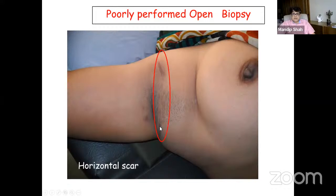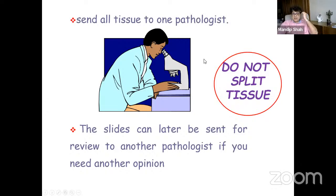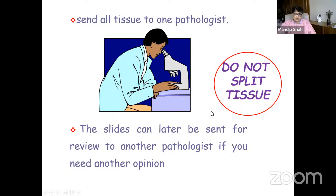Examples of poorly performed biopsies: inadequate hemostasis leads to infiltration, large hatch marks from open biopsy require significant skin excision during definitive surgery, and a horizontal scar with drains exteriorized inappropriately creates disaster. Do not split the biopsy sample and send it to two different pathologists — this is very poor practice. The tumor is heterogeneous; one pathologist may say benign, another malignant, and a third non-representative. Send all tissue to one pathologist, let them see the entire sample, and if the patient wants multiple opinions, have them retrieve slides and blocks.